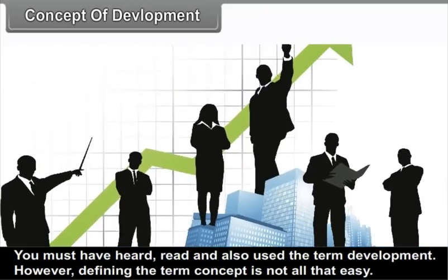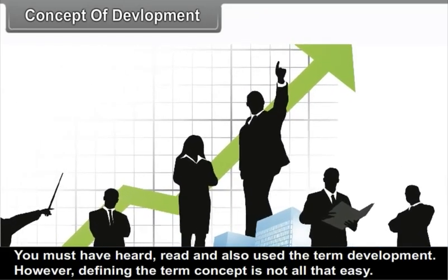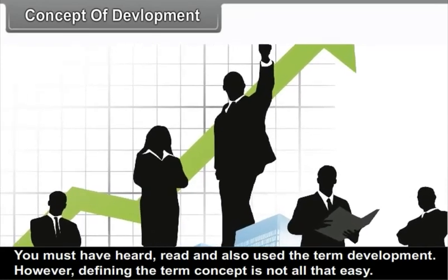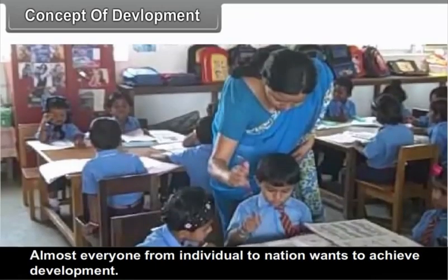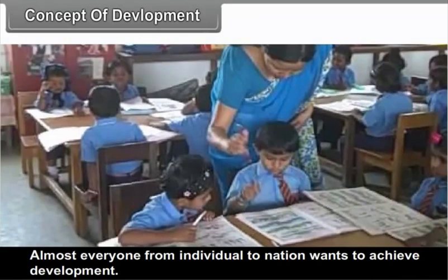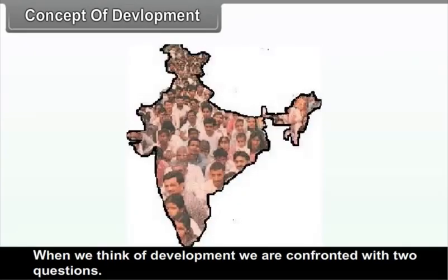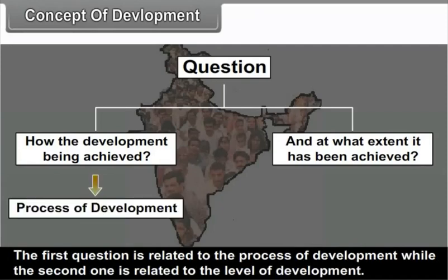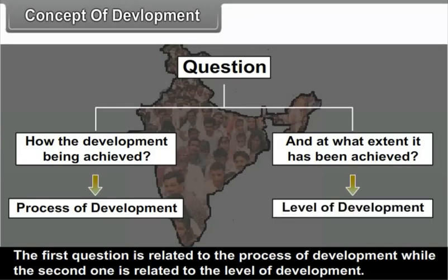You must have heard, read and also used the term development. However, defining this concept is not all that easy. Almost everyone, from individuals to nations, wants to achieve development. When we think of development, two questions arise: How is development being achieved? And to what extent has it been achieved? The first question is related to the process of development, while the second one is related to the level of development.